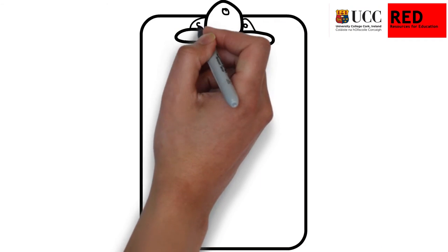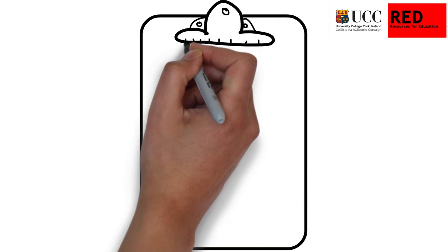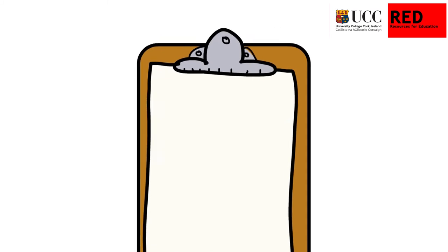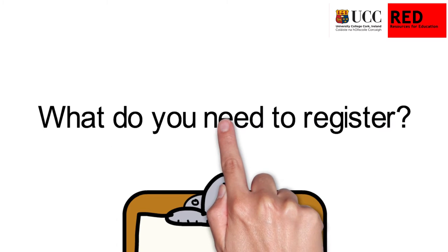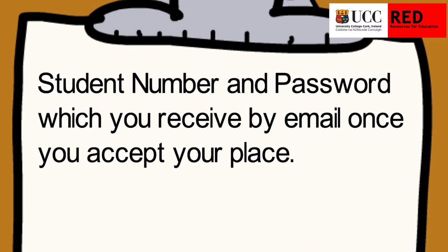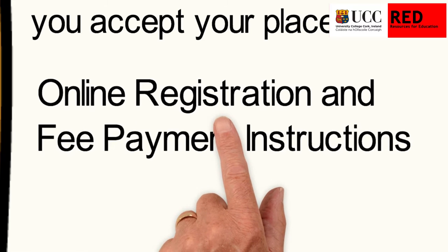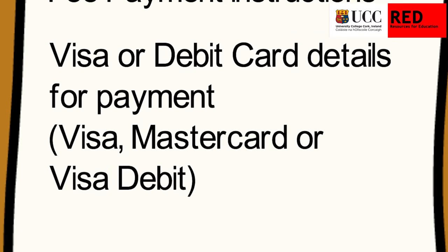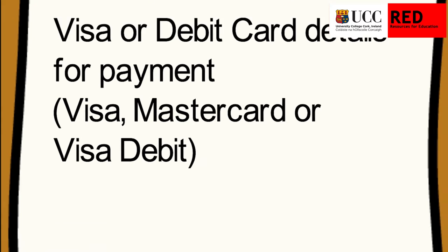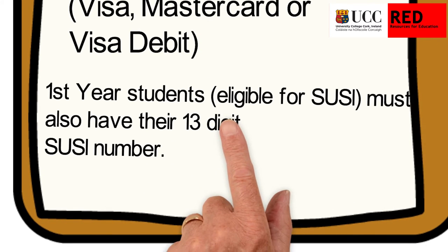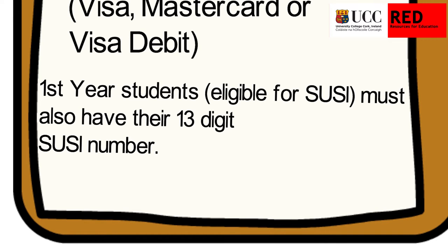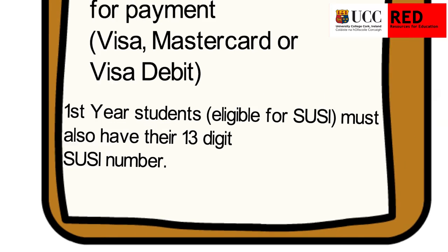What do you need to register? You need your student number and password, which you receive by email when you accept your place. You need your online registration and fee details, and a visa or debit card. First year students eligible for SUSE must also have their SUSE number.